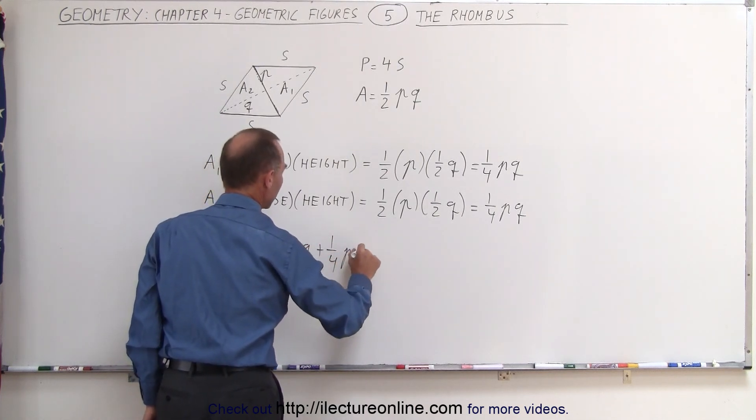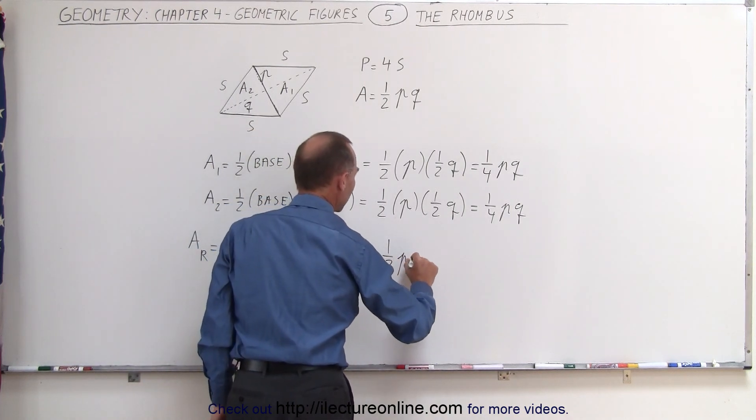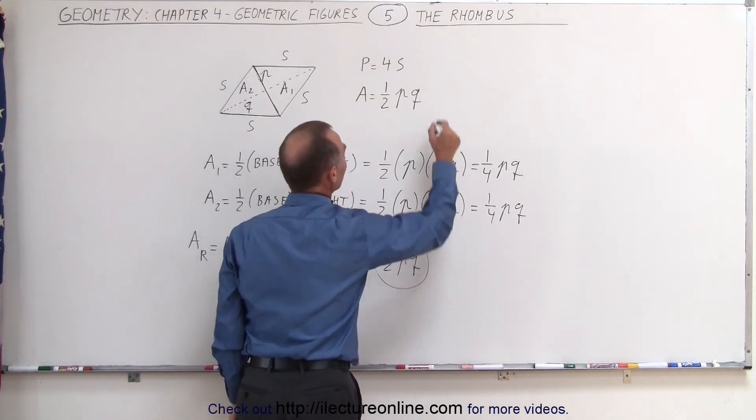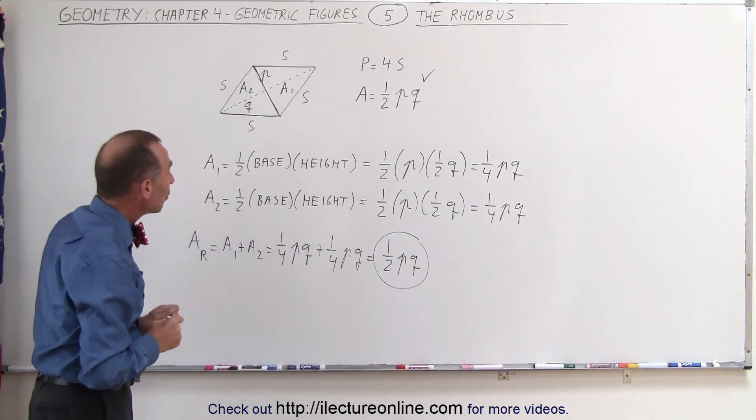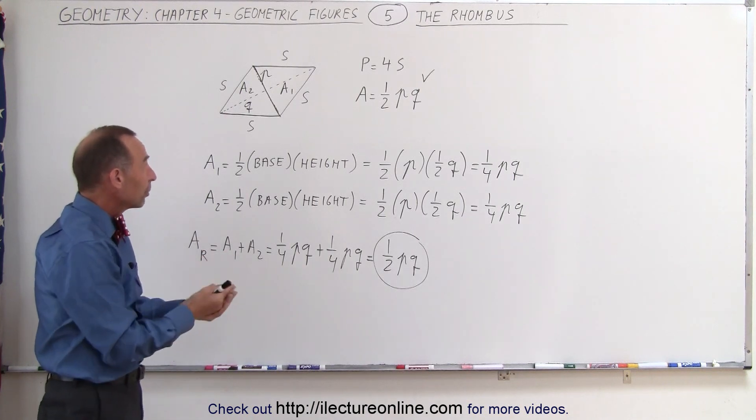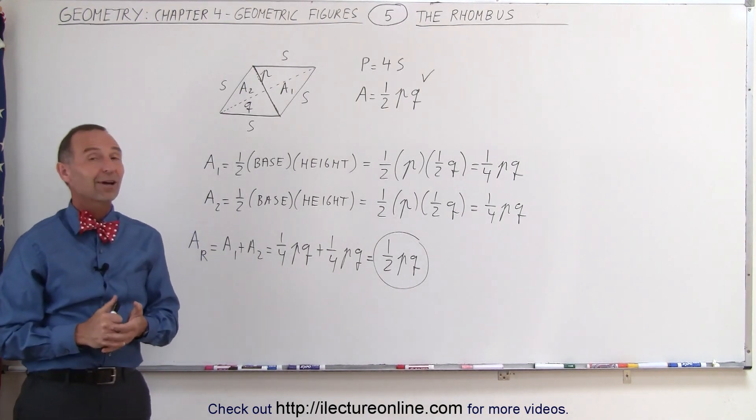plus one-quarter P times Q, which is equal to one-half P times Q, which is what we wrote over there. So to find the area of a rhombus, we need to know the length of the two diagonals. We simply multiply those together, divide by two, and you get the area. And that's how it's done.